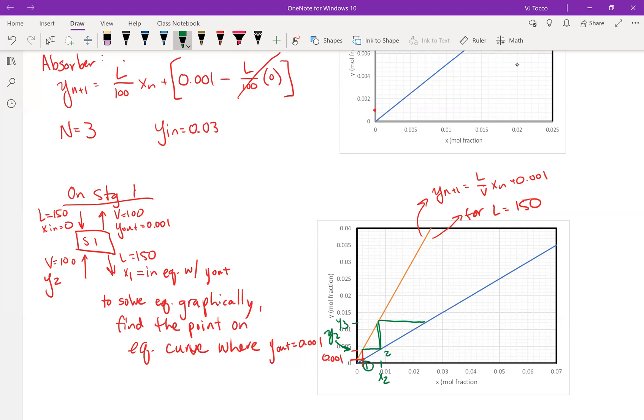And in order to get x_out, I have to do one more. So this is stage one, stage two, and stage three.